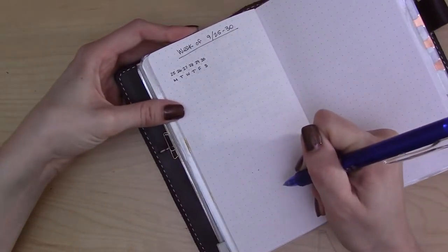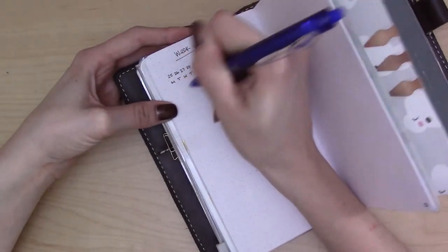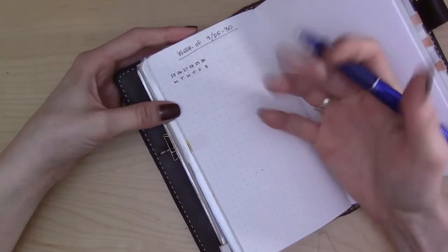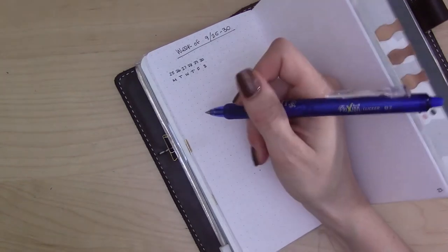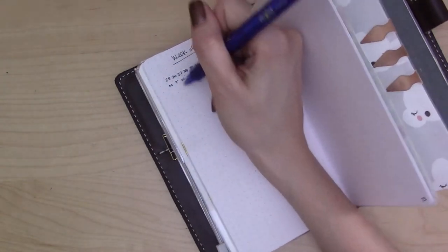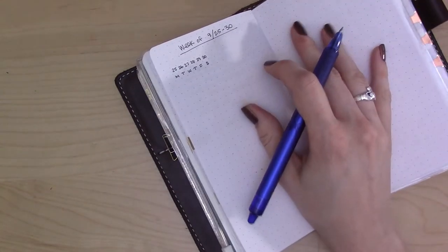So I'll list all of my to-dos here, and then sort of assign them a day as I decide what day I want to do them on, and then when it comes to that day, I just have to scan down the column and move all those tasks to their daily.